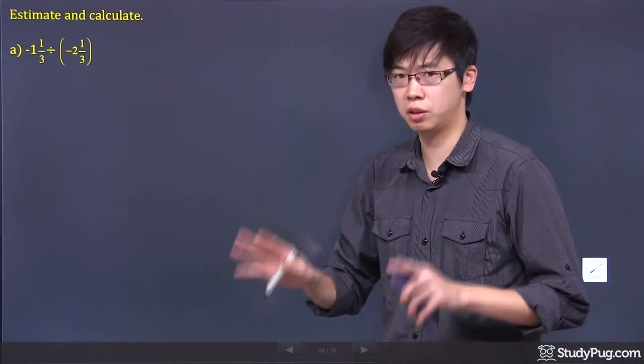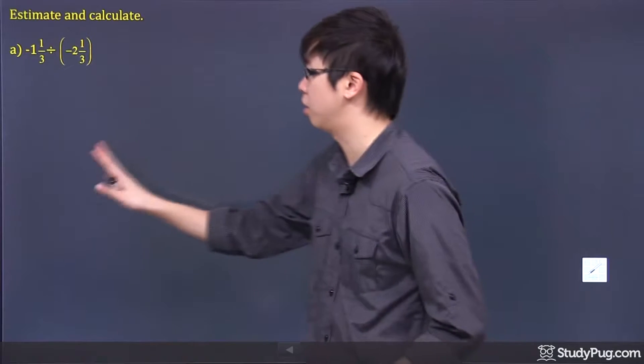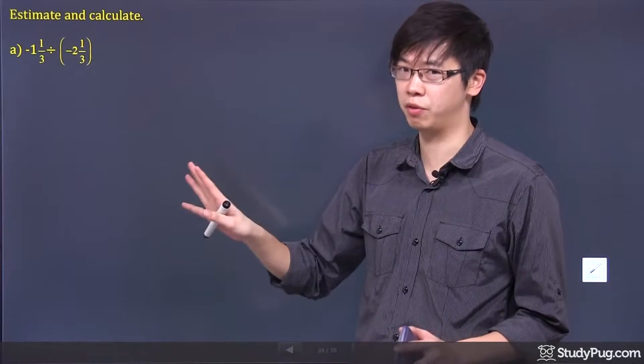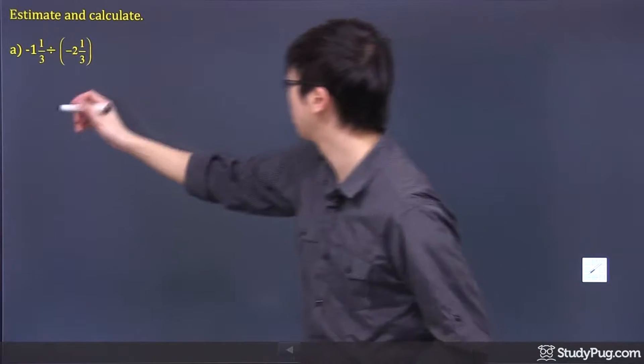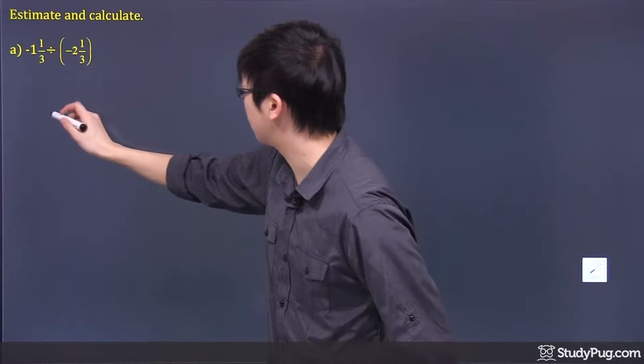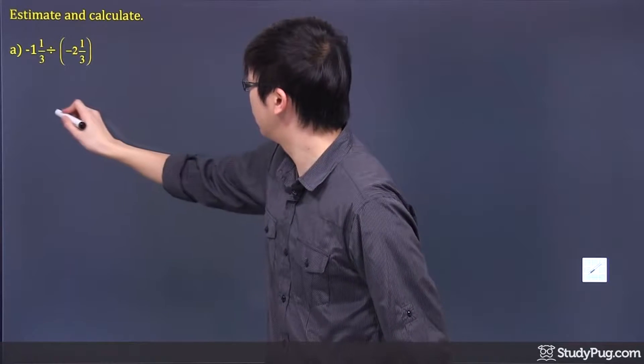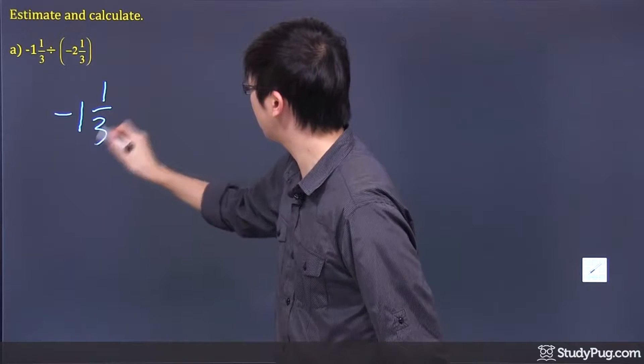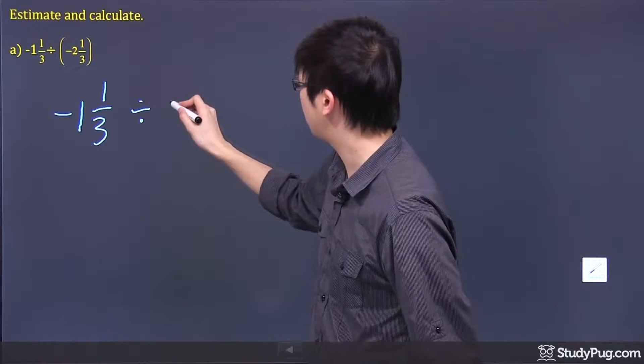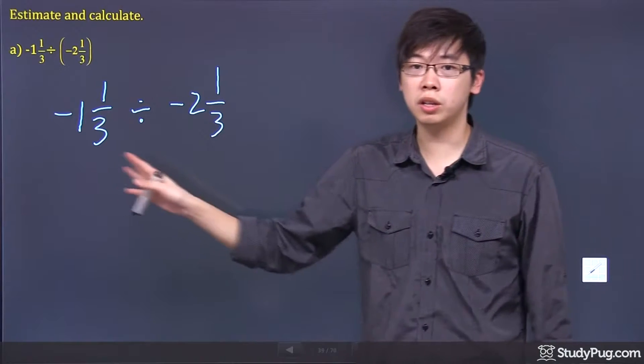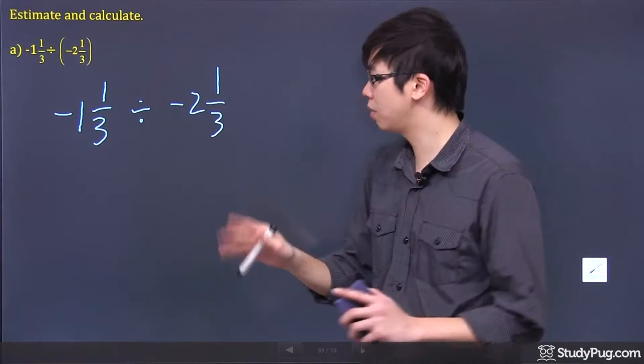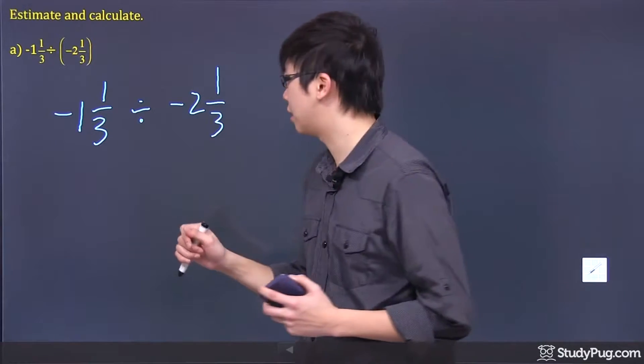First of all, before we do anything, it's still the original method. We should change to improper fractions. So what we have here is, let me just rewrite the question down here with the division sign, and here's a negative 2 and 1/3. Let's change everything to improper fractions. It makes it look nicer.